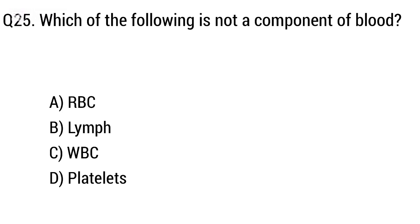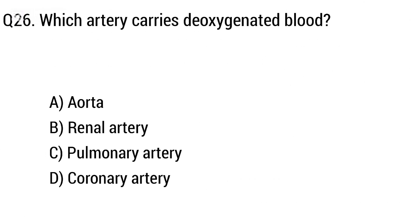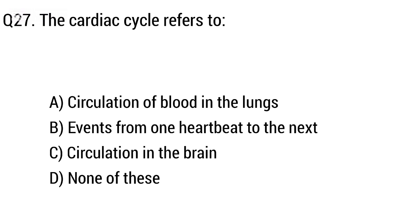Question 25: Which arteries carry deoxygenated blood? Option A: aorta, B: renal artery, C: pulmonary artery, D: coronary artery. The right answer is option C, pulmonary artery.